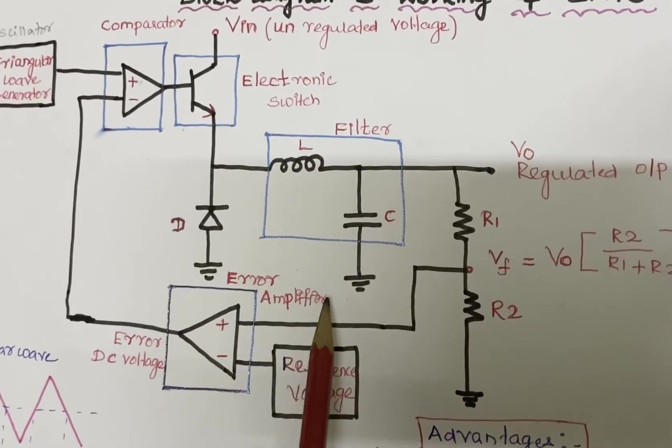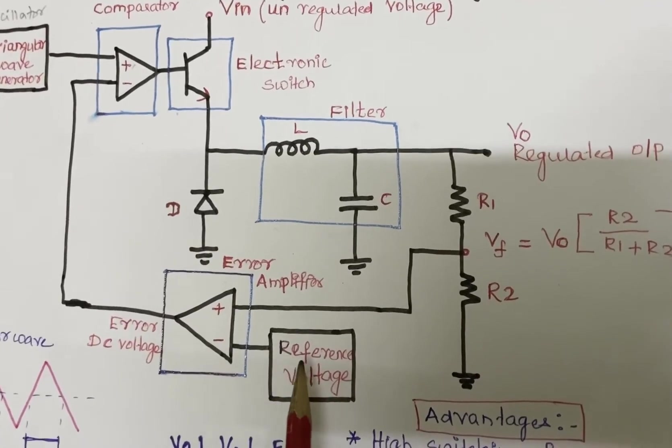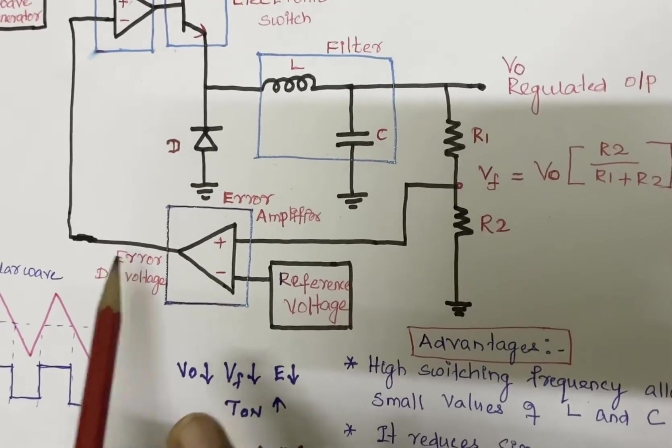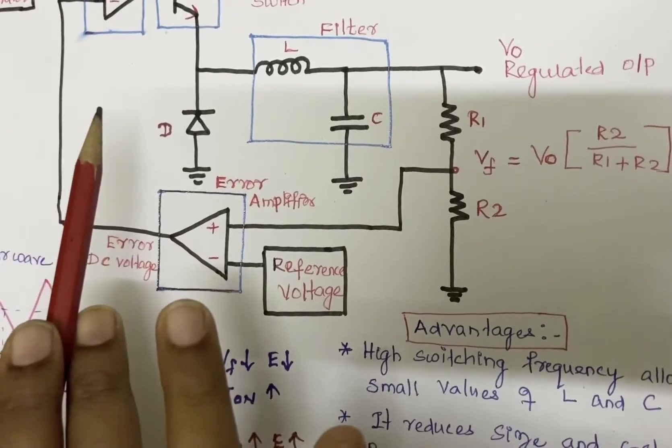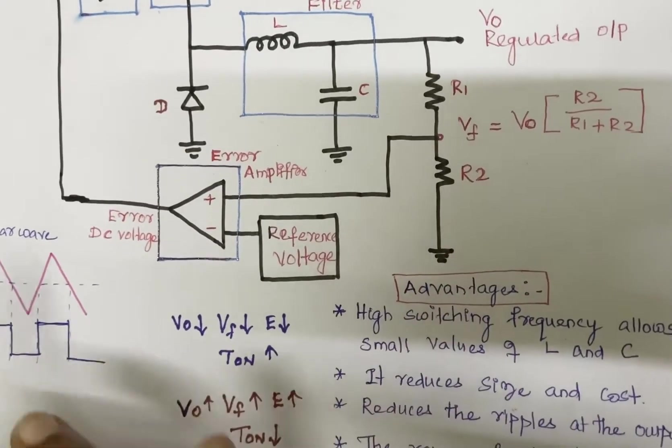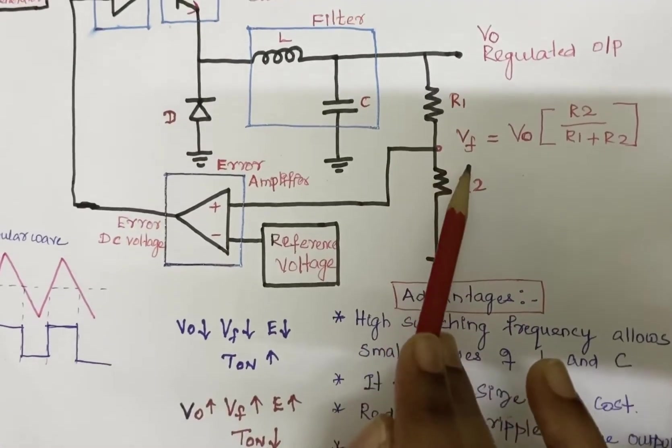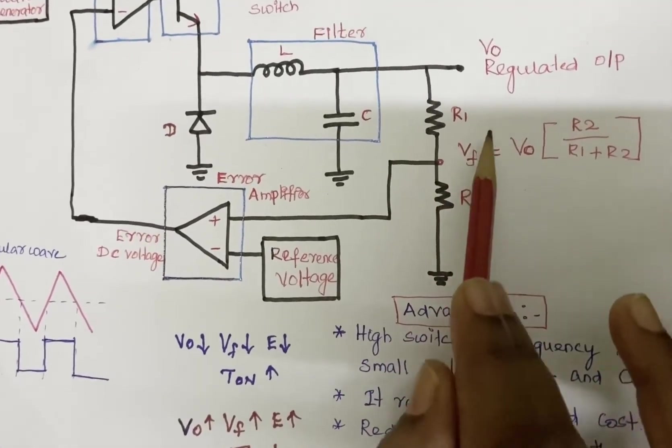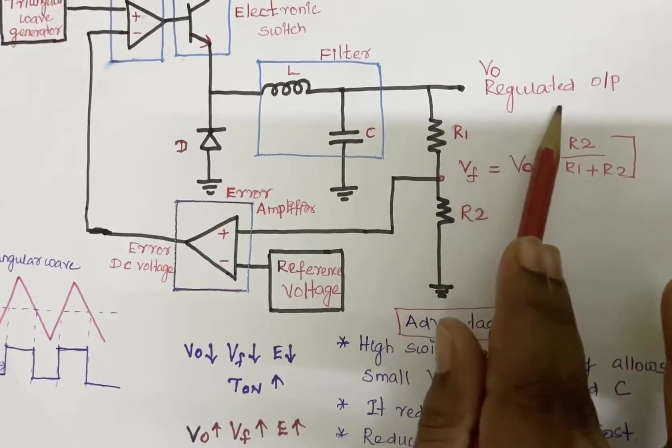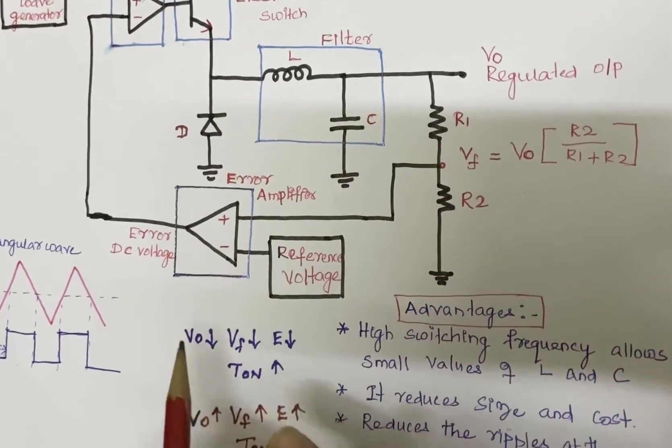The error amplifier compares the already fixed reference voltage, which produces the error DC output voltage. This is given to the comparator. This is the generalized working principle. Let us see two cases: for example, the ultimate aim is to control the regulated output.